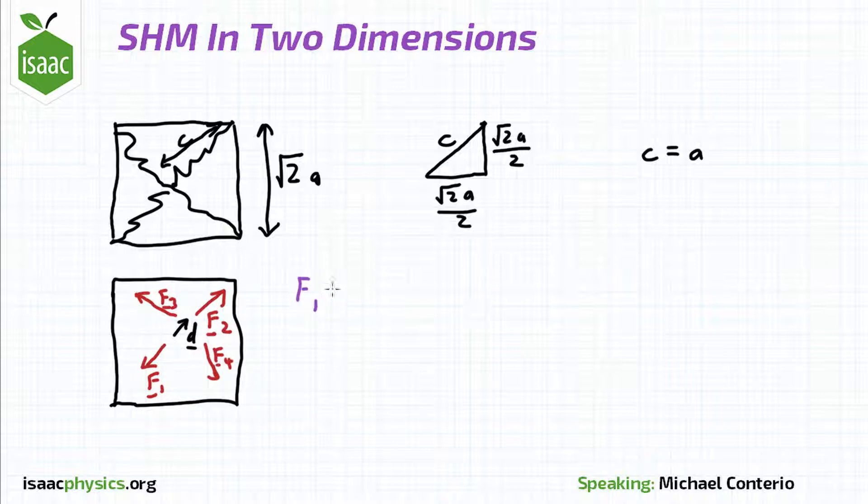Taking the directions in which these forces are drawn as positive, the size of F1 is (a + d - a/2)k, and F2 equals (a - d - a/2)k.